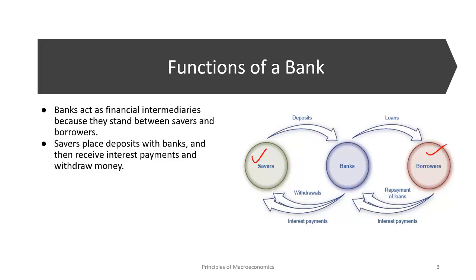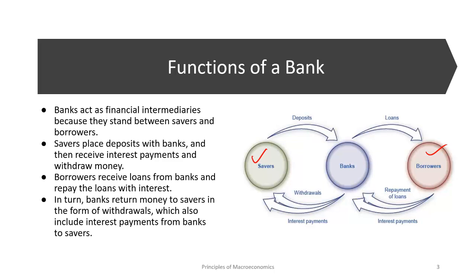When you put money in a bank, the bank collects all this money and lends it out to borrowers. Borrowers receive loans from banks and repay those loans with interest — they pay an interest charge, and that interest becomes income for the bank. In turn, banks return money to savers in the form of withdrawals which also include interest payments. Borrowers pay extra money on what they borrowed, banks pass part of that to savers as interest, and keep the rest as their own profits.